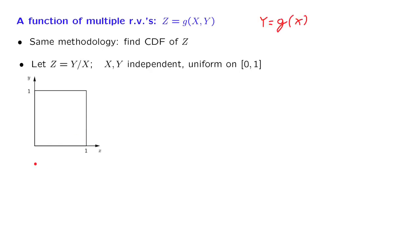So now let us write an expression for the CDF of z, which by definition is the probability that the random variable z, which in our case is y divided by x, is less than or equal than a certain number, little z. What is the probability of this event?